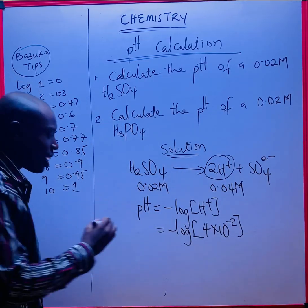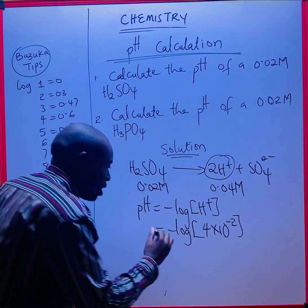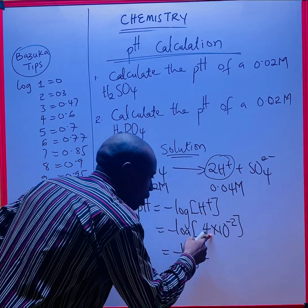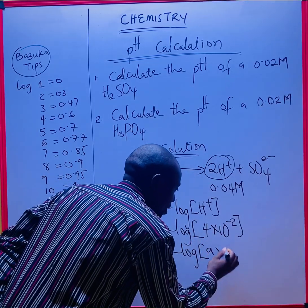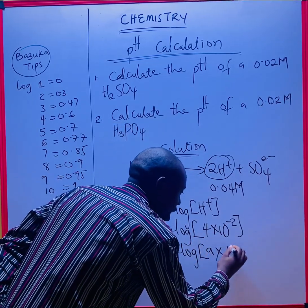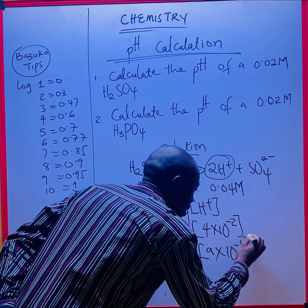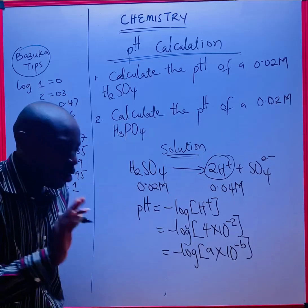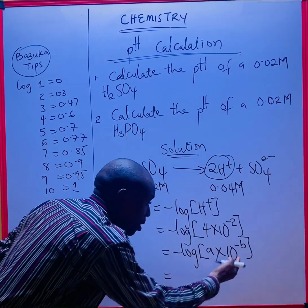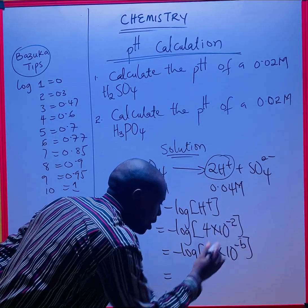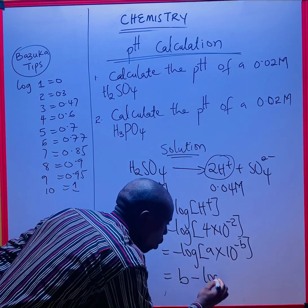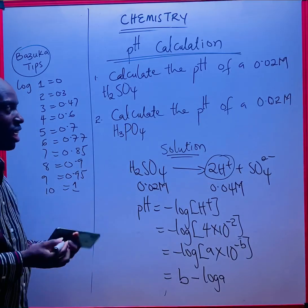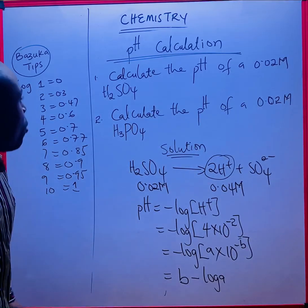The shortcut is like this. This is the template: negative log, we take this 4 to be a times 10 raised to minus b. Whenever this is the template, to get your final answer without using a calculator, you simply equal to this b minus log a. The answer will just come out.